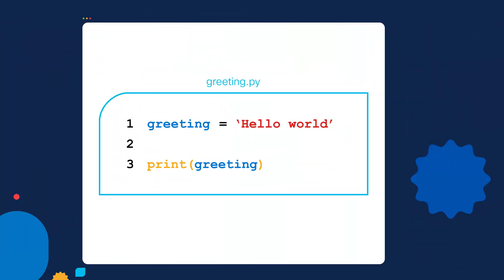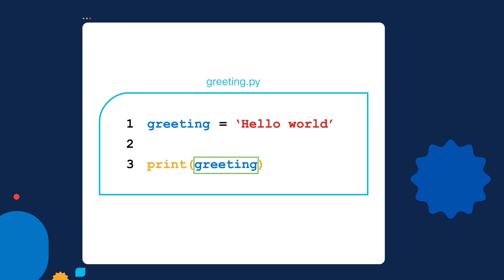Let's make sure we're clear on why the script is printing out hello world. In line one, we created the greeting variable and assigned it to a value of hello world. That variable name and value get stored in memory. And because they're stored in memory, we can later print out the value of the greeting variable in line three, which simply prints out hello world.